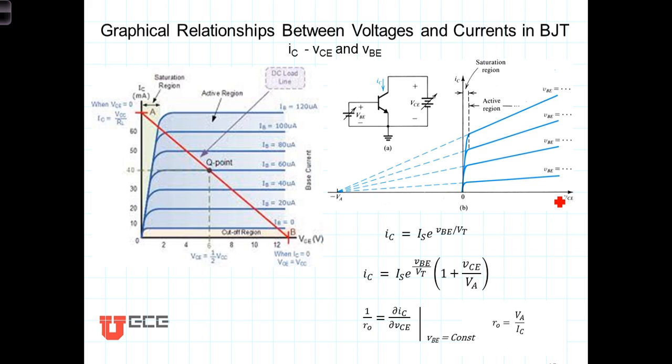To understand this phenomenon, recall that as we saw when deriving the formula for I sub C, the saturation current I sub S was inversely proportional to the width of the base. The narrower the base of the transistor, the larger I sub S was. So for our current topic, as VCE increases, increasing the reverse bias voltage on the collector to base PN junction, the depletion region of the base collector junction increases, effectively narrowing the width of the base and increasing I sub S.